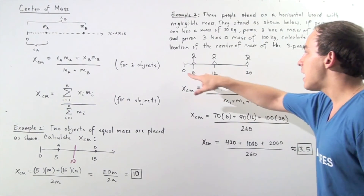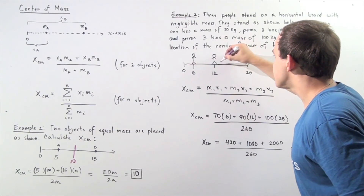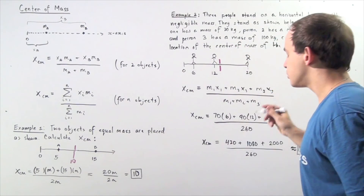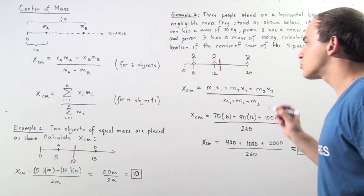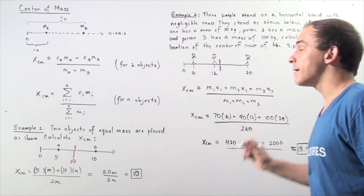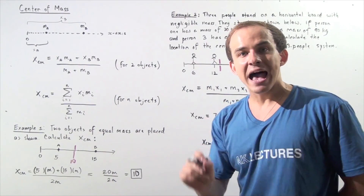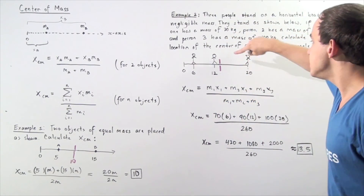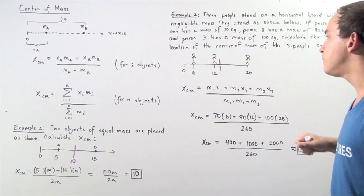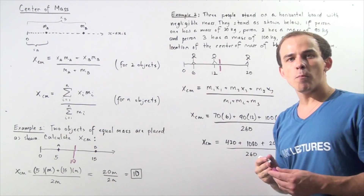The center of mass is 13.5 units from the zero mark. So if we're treating our three-person system as one object, the center of mass of that object is found at this position, 13.5 units from the zero mark.